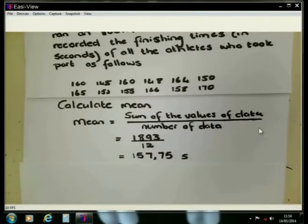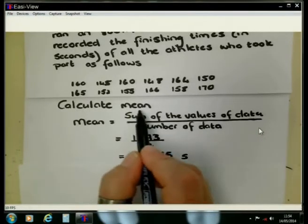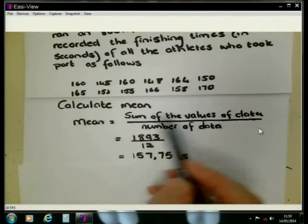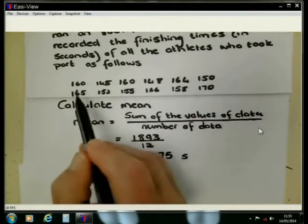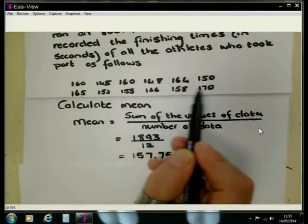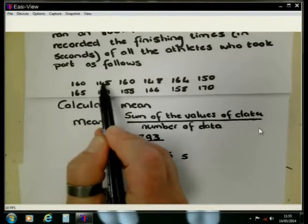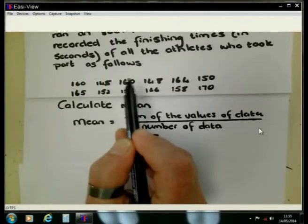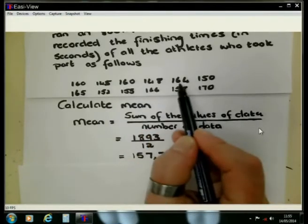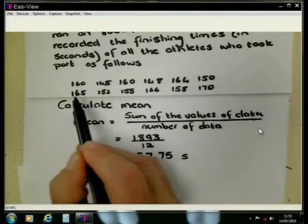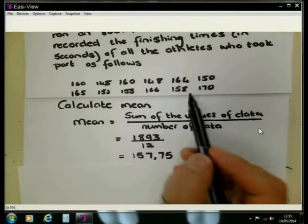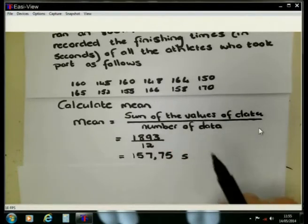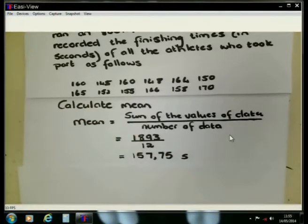Then to summarize, what do we do when we calculate the mean of a set of data? We add the values of each of these data in the set. The 160 plus the 145 plus 160 plus 148, 164, plus 150, 165, plus 152, plus 155, plus 166, plus 158, plus 170. We add all of them together.